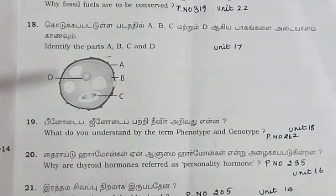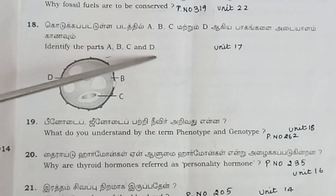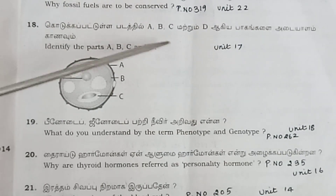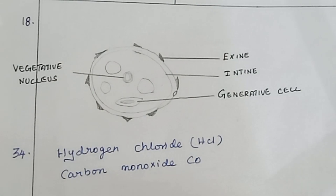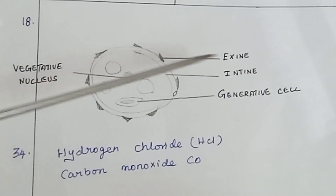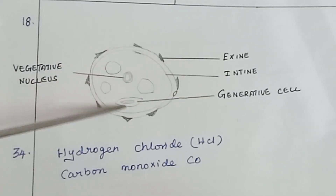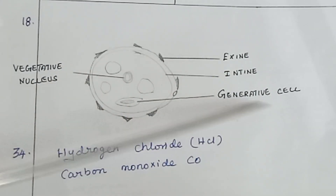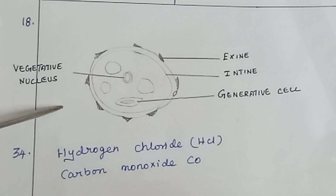Question 18 (diagram): Identify the parts A, B, C, and D — Unit 17, diagram of a pollen grain. A is exine, B is intine, C is generative cell, D is vegetative nucleus.